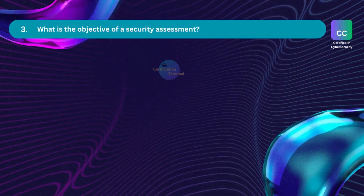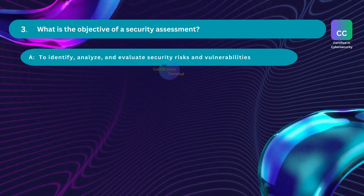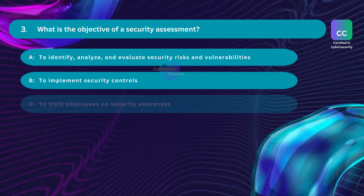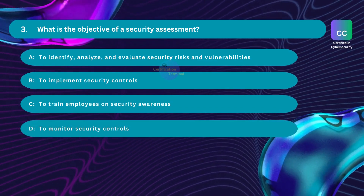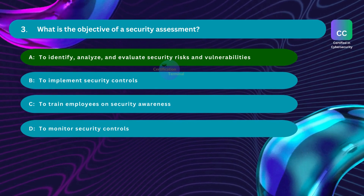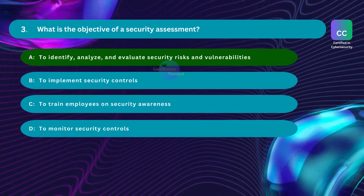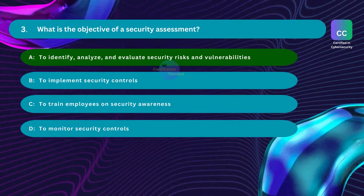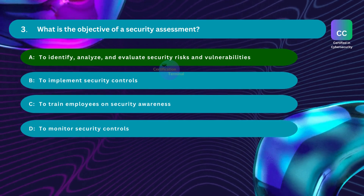Question number 3. What is the objective of a security assessment? Option A: to identify, analyze, and evaluate security risks and vulnerabilities. Option B: to implement security controls. Option C: to train employees on security awareness. Option D: to monitor security controls. The correct answer is Option A. The purpose of a security assessment is to identify, analyze, and evaluate security risks and vulnerabilities within an organization's information systems and assets. This helps an organization determine its current security posture and identify areas for improvement to reduce the risk of potential threats.